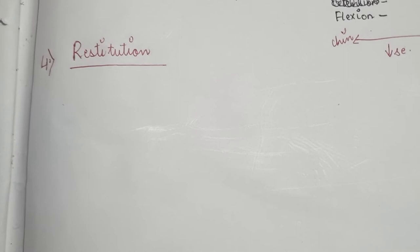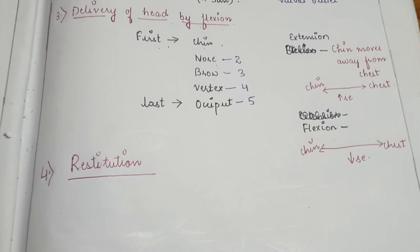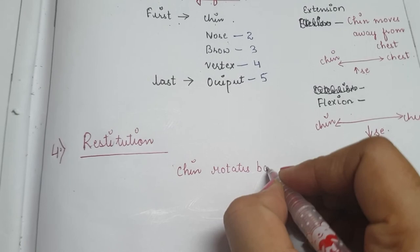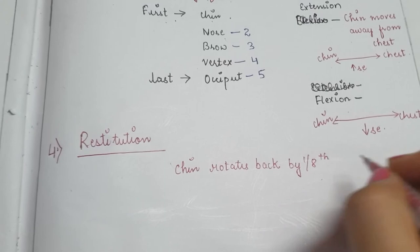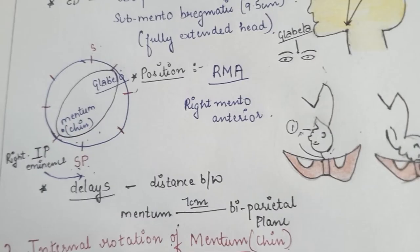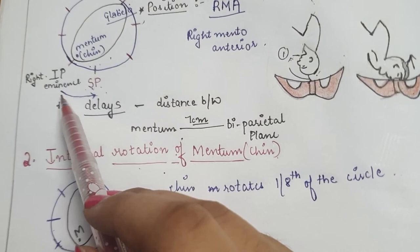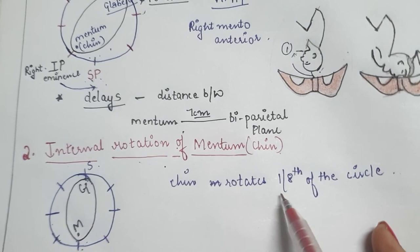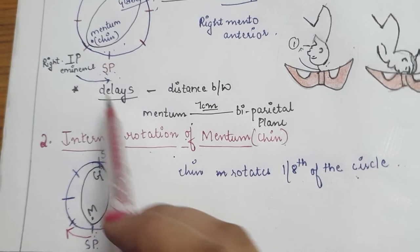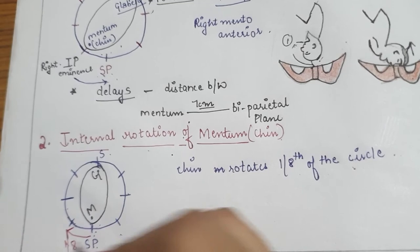Next is restitution. After delivery of head by flexion, in restitution the chin rotates one-eighth of a circle opposite to the direction of internal rotation. Internally, the mentum came behind the symphysis pubis rotating one-eighth of a circle. In restitution, when the head is born, the mentum rotates back opposite to the internal rotation by one-eighth of a circle.